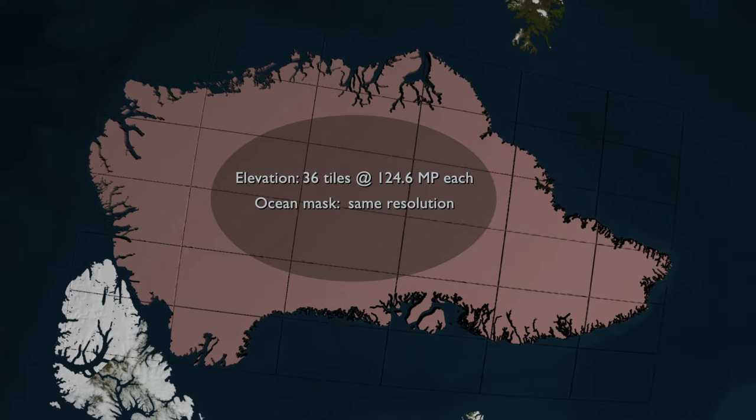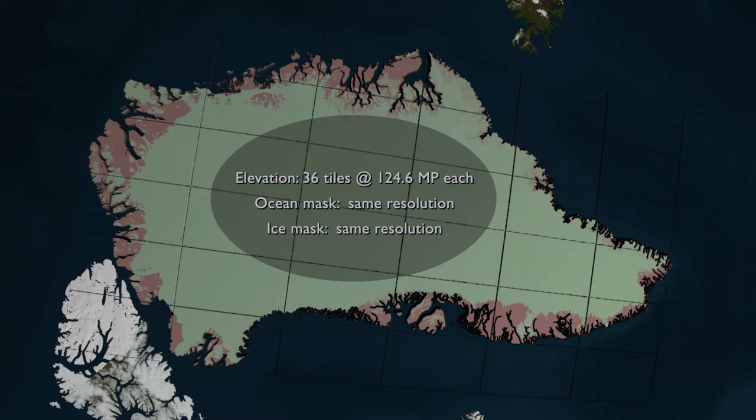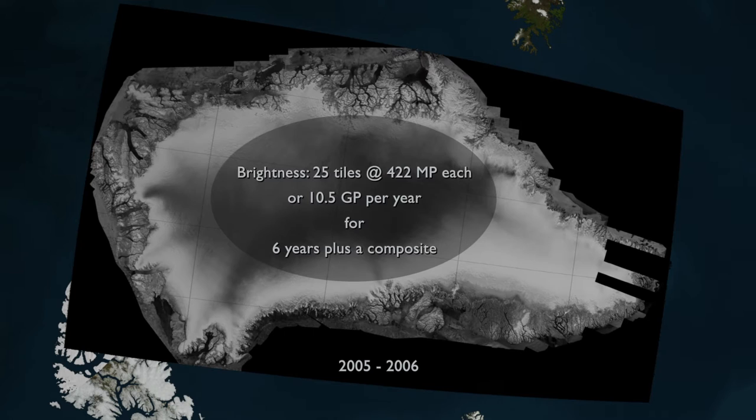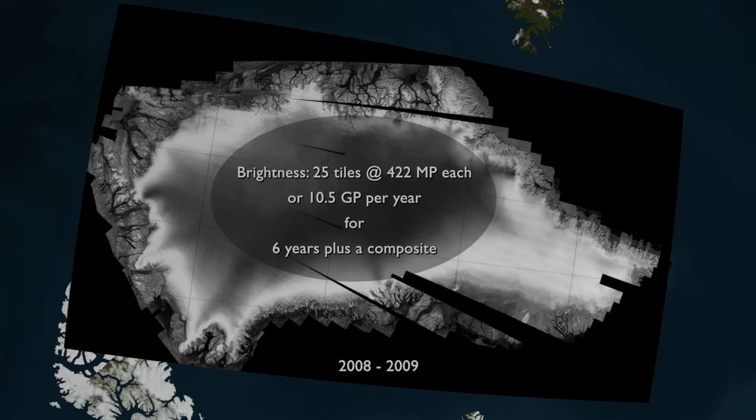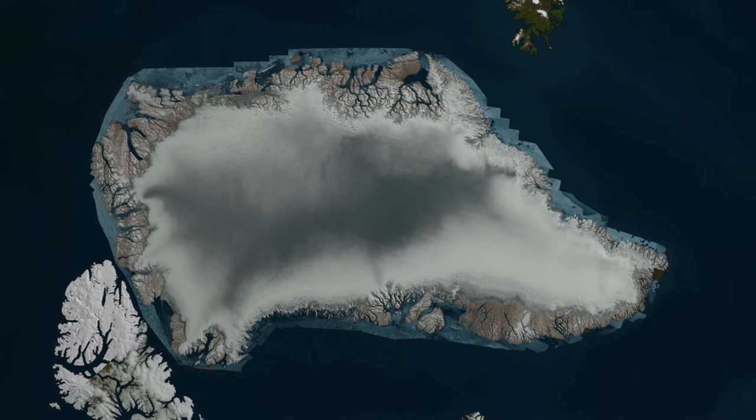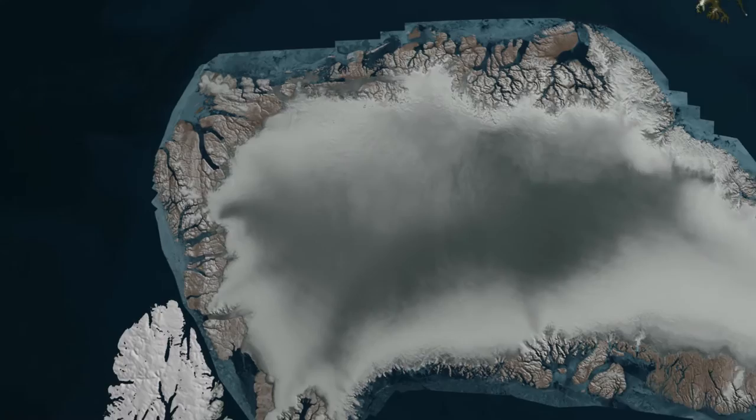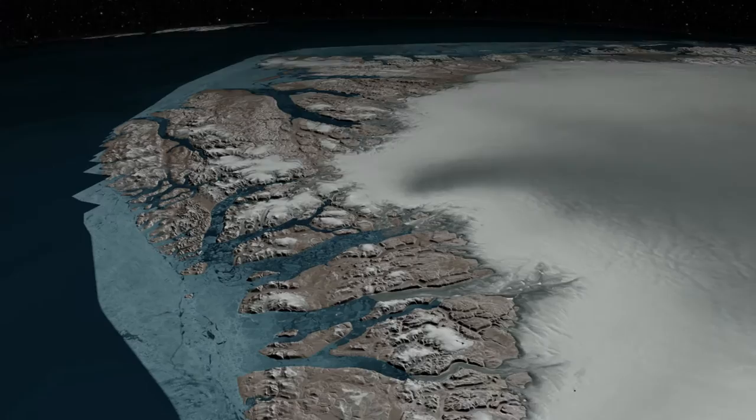For example, we obtain 30-meter topography data for Greenland, along with an ocean and ice sheet mask, from the Greenland Ice Mapping Project at Ohio State. Each of these datasets consists of a 6x6 array of 124 megapixel tiles. We also received 7 sets of 20-meter radar data from the Canadian Space Agency, mosaicked at the University of Washington's Applied Physics Lab. Each set consists of a 5x5 array of 421 megapixel tiles.